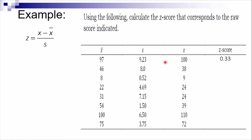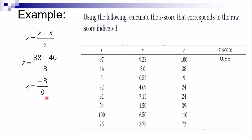For item two, x is 38, the mean is 46, and the standard deviation is 8. So 38 minus 46 equals negative 8, divided by 8 gives us negative 1. The z-score for item number two is negative 1. The rest of the items you can complete on your own using the same process.